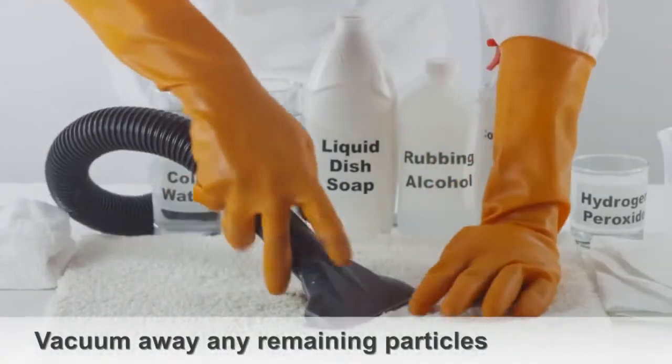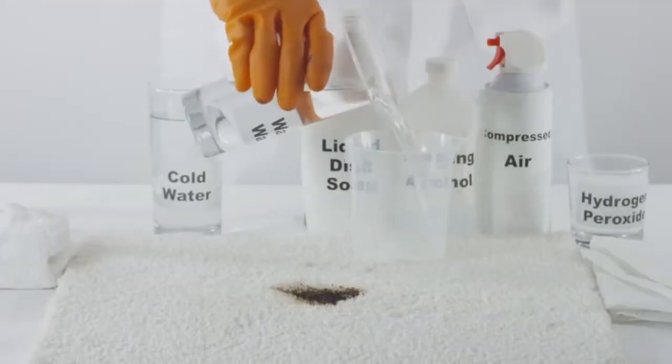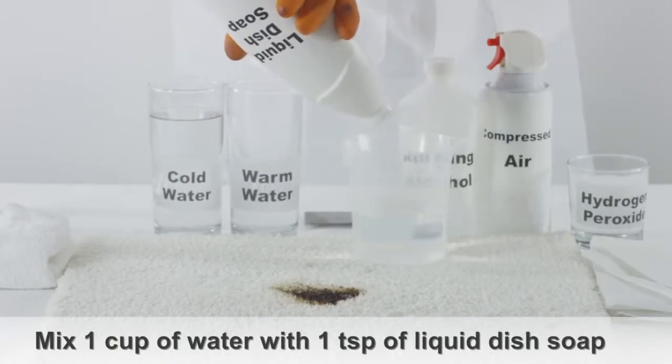Vacuum the tar stain to get rid of any remaining particles. To create a cleaning solution, mix one cup warm water and one teaspoon of liquid dish soap.